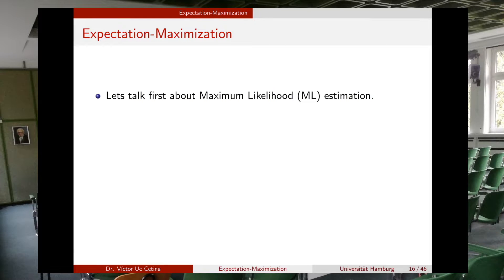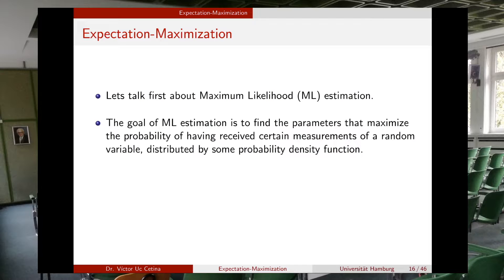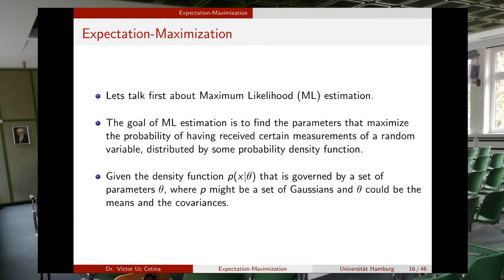To talk about expectation maximization, first we need to review the concept of maximum likelihood estimation. In maximum likelihood estimation, we want to find the parameters that will maximize the probability of observing certain values for some random variables. Given a density function — in this case a conditional function like probability of X given the parameter theta — this probability may be governed by a Gaussian distribution with theta parameters represented by the means and covariances of these Gaussians.